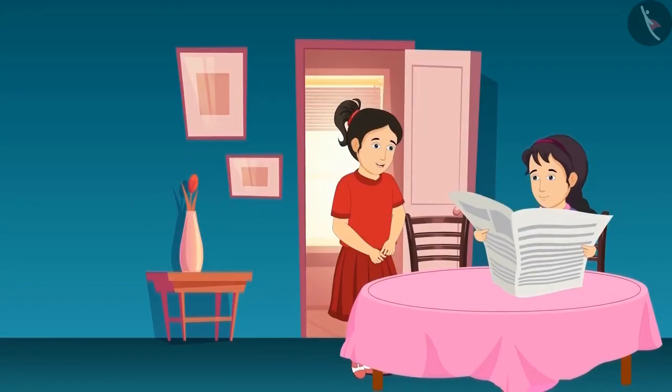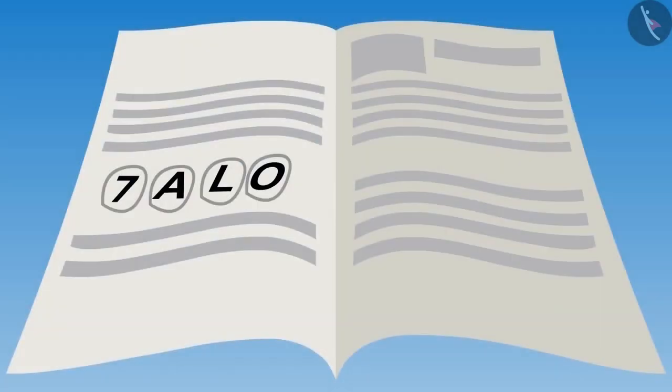Sister, what are you reading in the newspaper? Come on, let's play a new game. Meena got an idea of a new game after seeing the letters in the newspaper. She circles some alphabets and asks Reva.